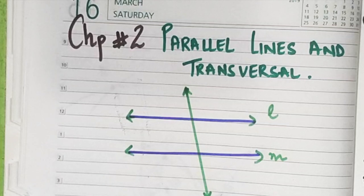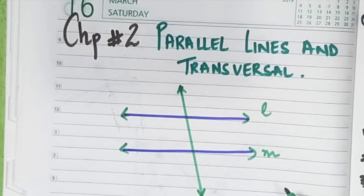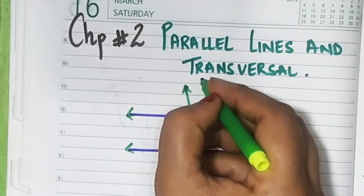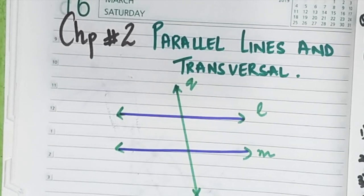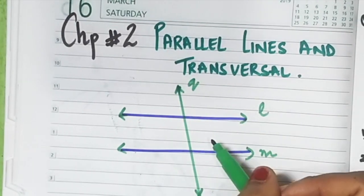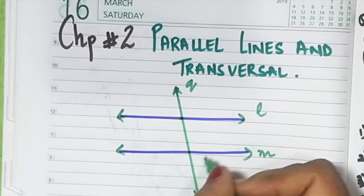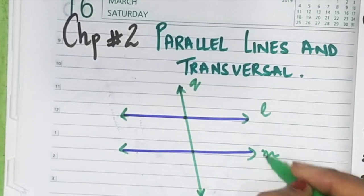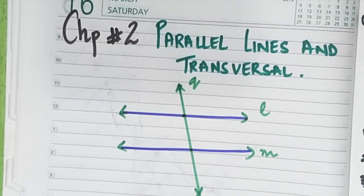Parallel lines and transversal. We have two parallel lines, line L and line M, which are parallel to each other and lie in the same plane. This particular line we label as Q. Q is called the transversal — a line that intersects two given lines at two distinct points. This chapter is all about parallel lines and their transversal.